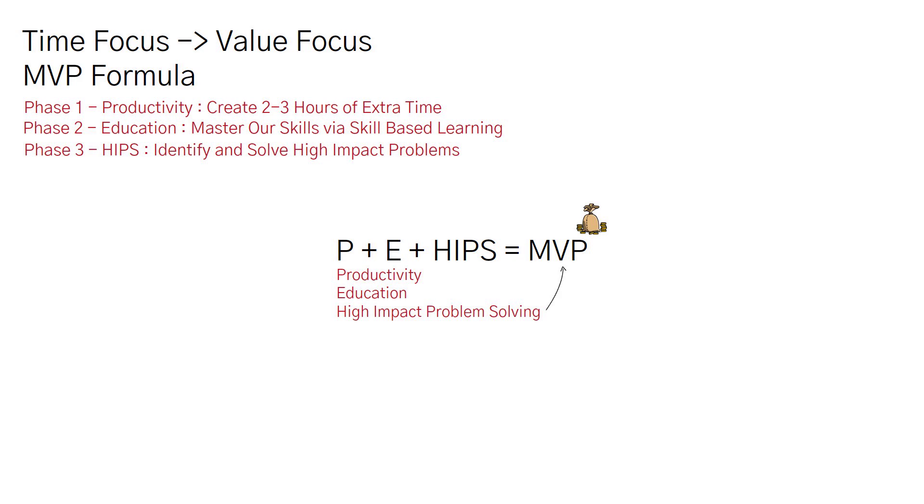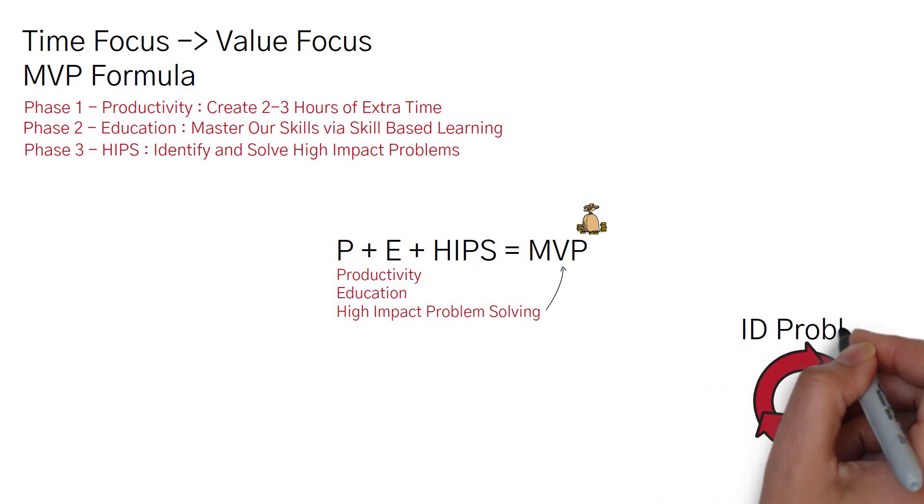And we create this flywheel where we are constantly uncovering high impact problems, being the person to solve them and own them, and then moving on to another high impact problem to solve. And you create this flywheel, this cycle of maximizing value. And if you choose your problems correctly, you will add massive amounts of value to where they desperately need and want to promote you, want to keep you around.